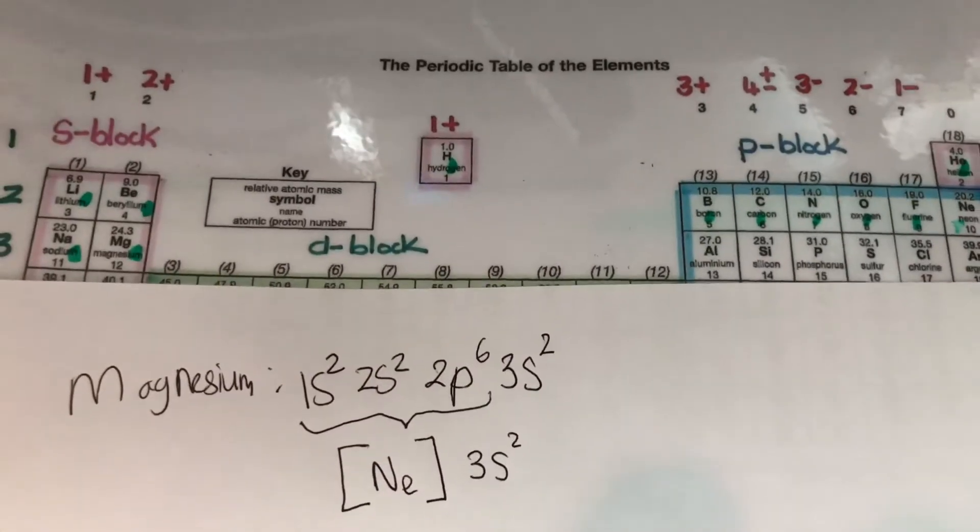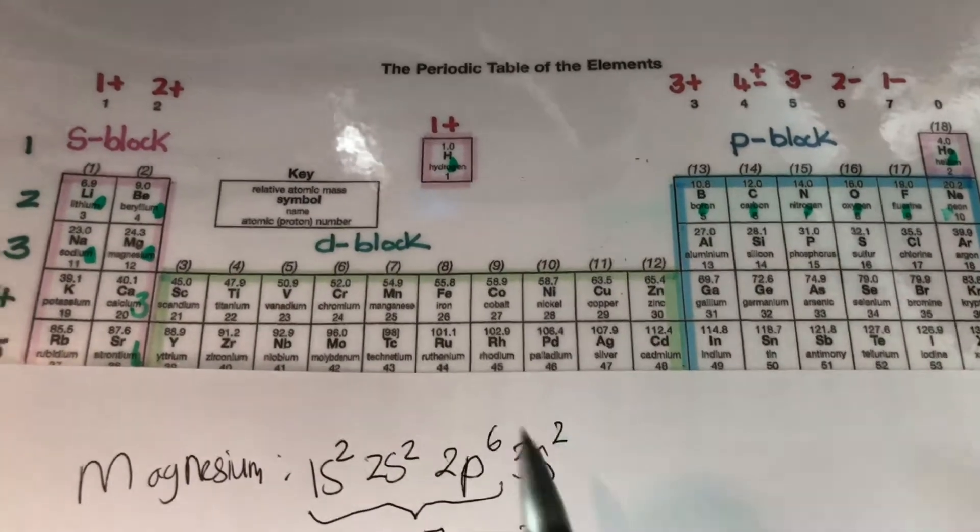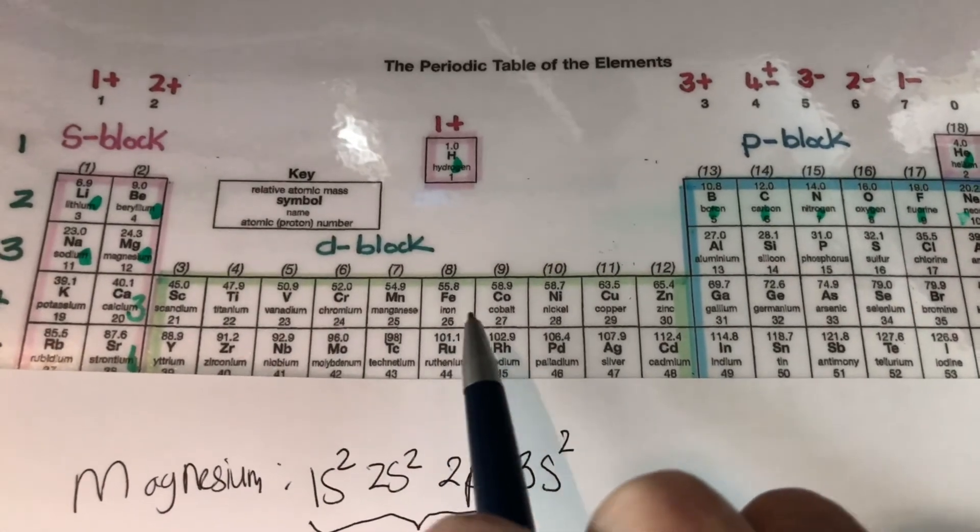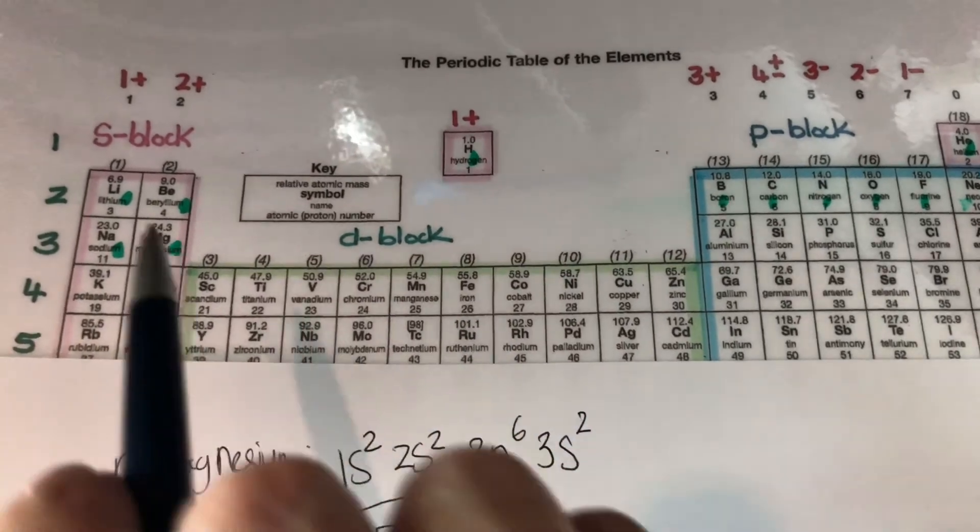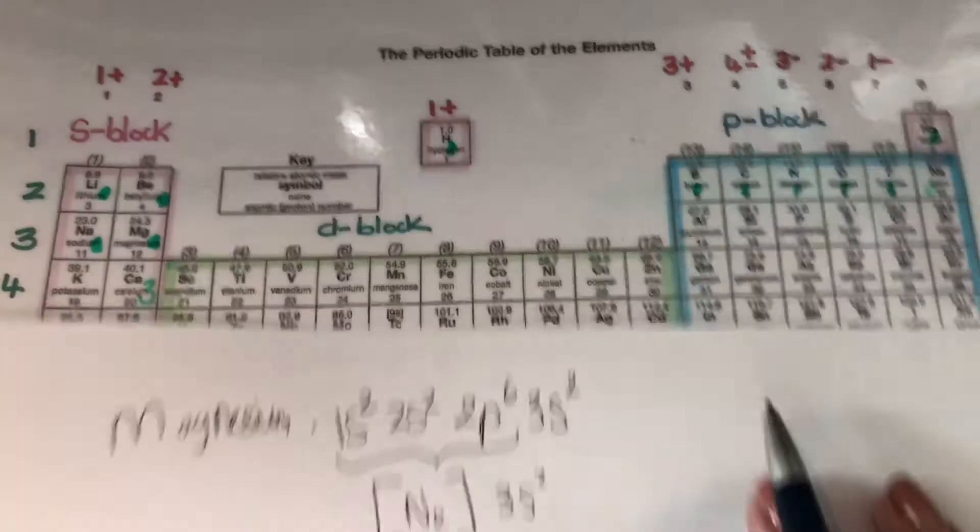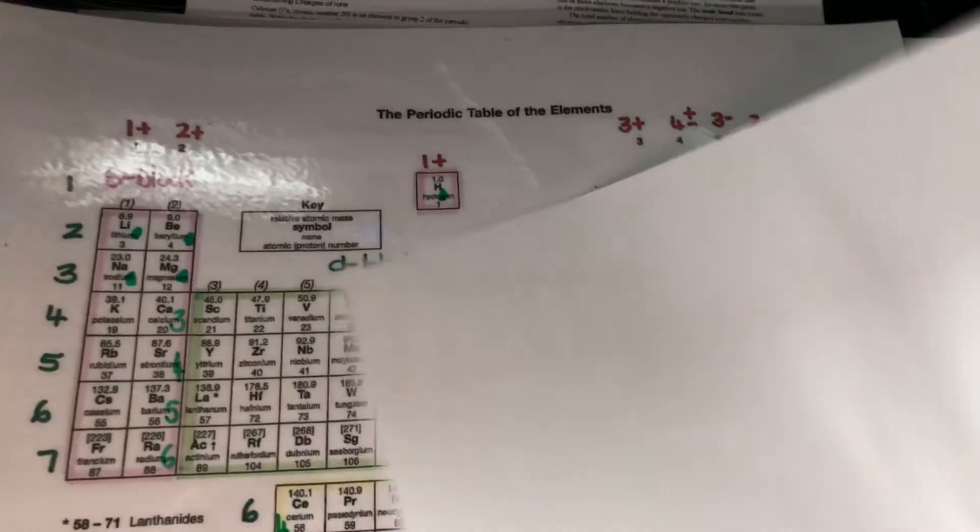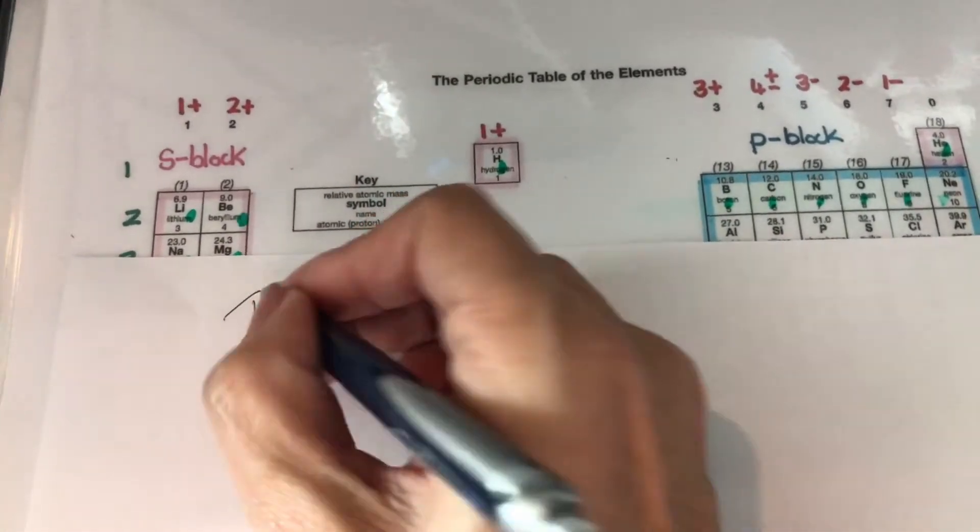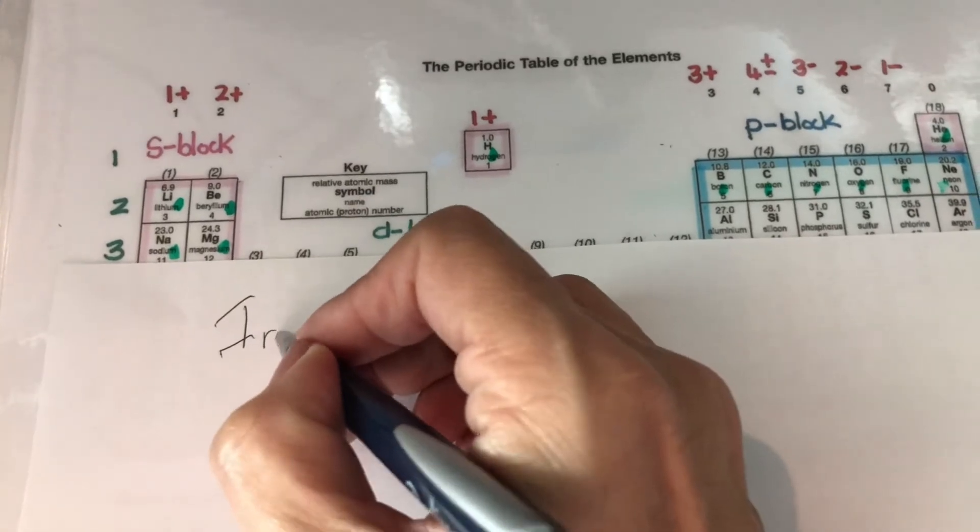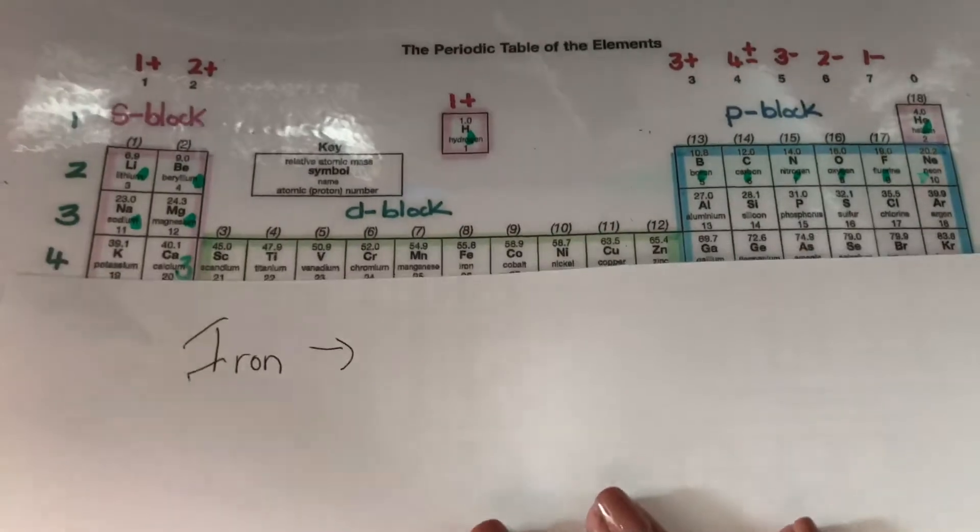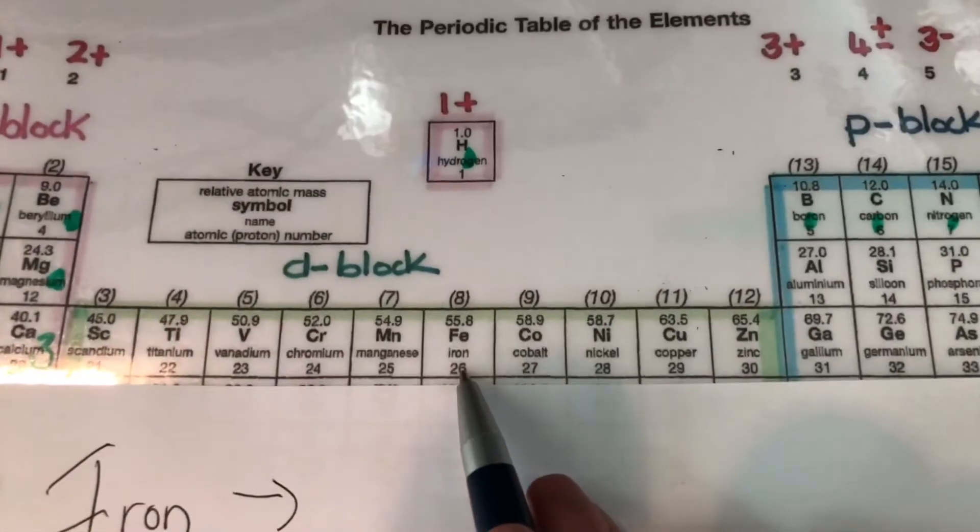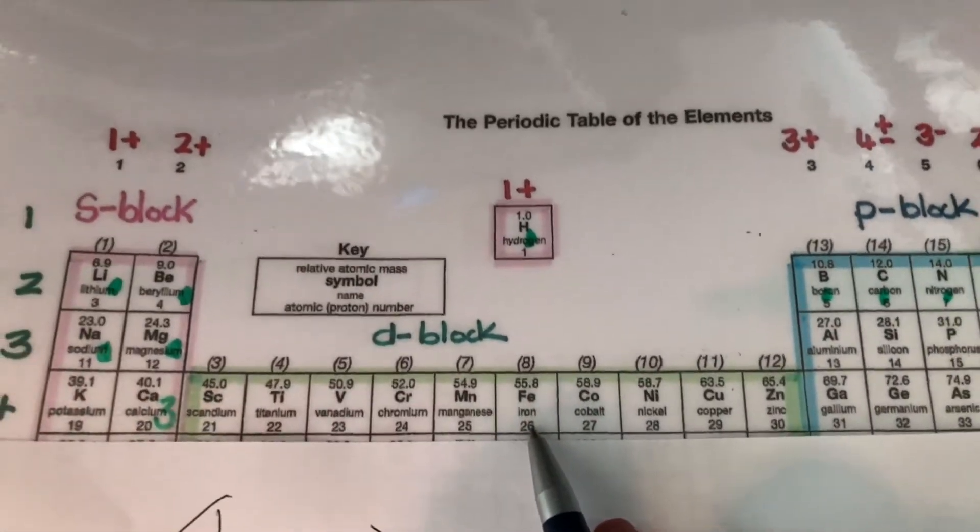So what happens when the element is lying over here? So let's say, for example, I want to do iron. Iron would be exactly the same. I would start in the first period. So let's quickly do iron. We'll turn this around and we are going to do iron. Or iron, as you girls always tell me. Right, so I want to get all the way over here. So I have to start at the beginning.